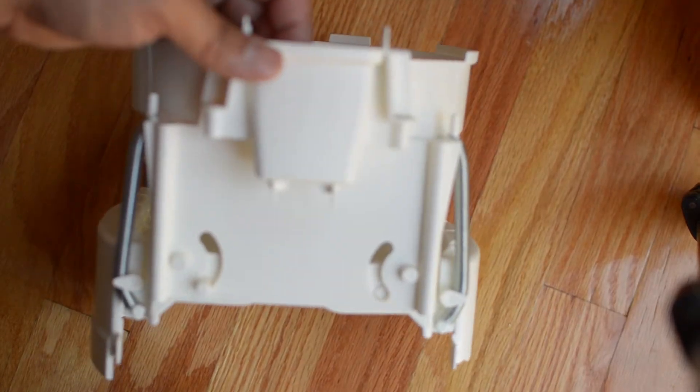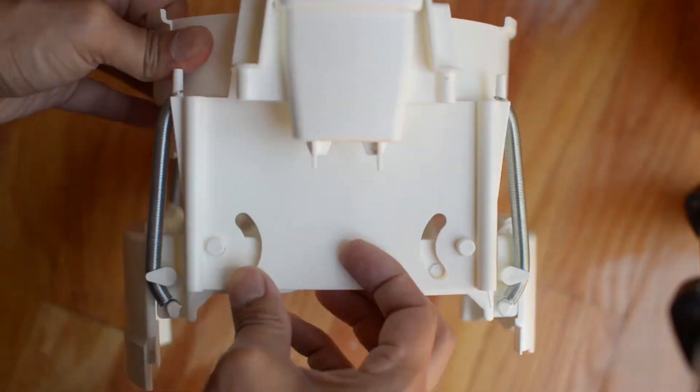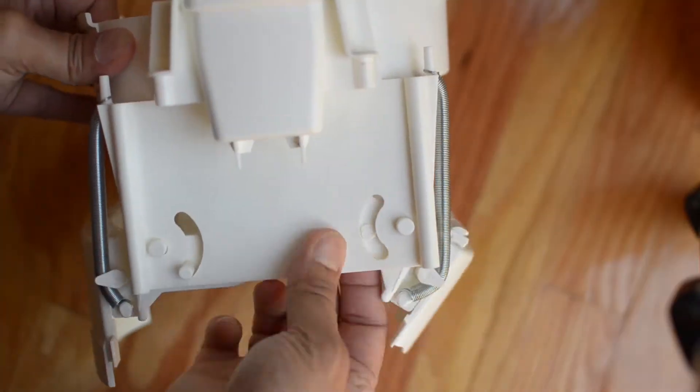This is a side view of the assembly in its proper orientation. Notice how one of the tabs is broken? Because of this the lever can't push on it and the flap won't open.